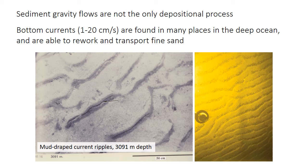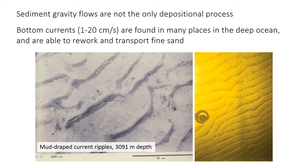Sediment gravity flows like turbidity currents or debris flows aren't the only way that sediment is transported in the deep ocean. Many areas in the deep sea have fairly continuous unidirectional current flow, up to a few tens of centimeters per second, capable of transporting silt, very fine sand, or even fine sand. Examples include thermohaline currents, wind-driven currents, tidal currents, and internal waves. With current velocities on the order of a few tens of centimeters per second, fine sand can produce current ripples, and rippled surfaces are somewhat widespread in the deep sea.